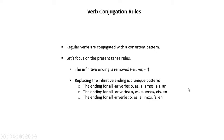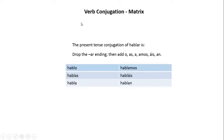Now, let's get more specific. Here, I'm providing you with what I call a verb conjugation matrix. We're going to focus on the present tense conjugation of hablar. The rule is we drop the AR ending and then add either O, AS, A, AMOS, AIS, or AN. That would translate to what you see here: hablo, hablas, habla, hablamos, habláis, hablan.